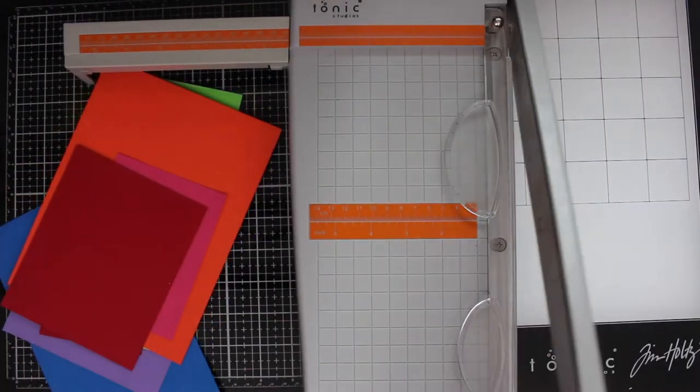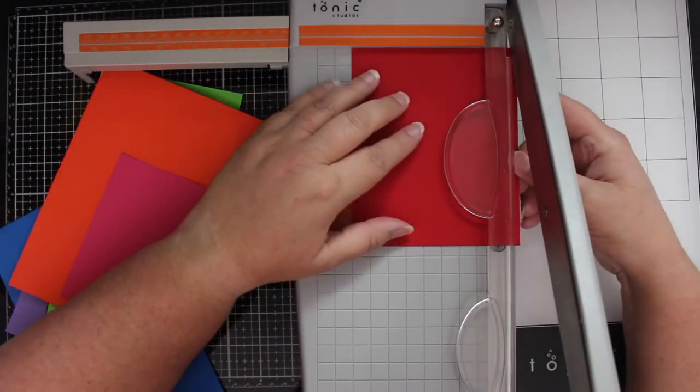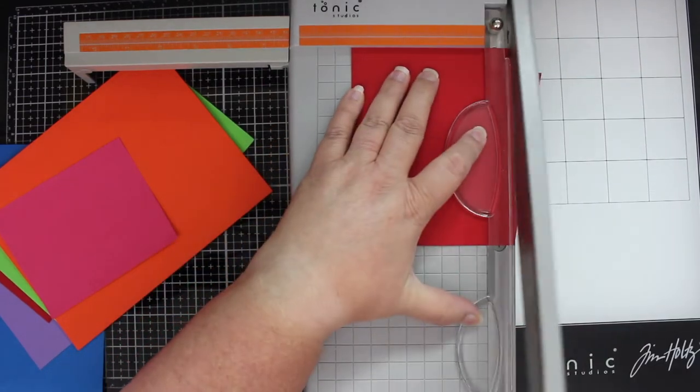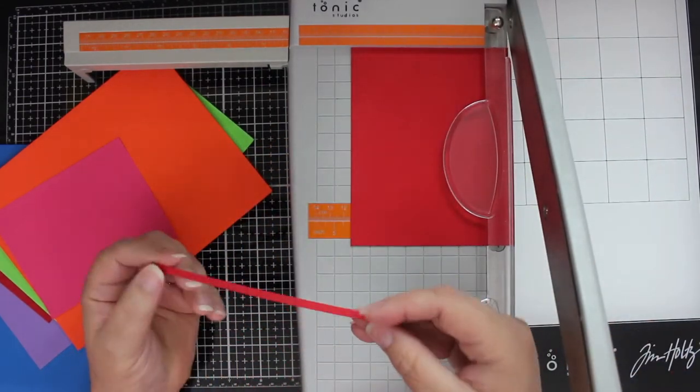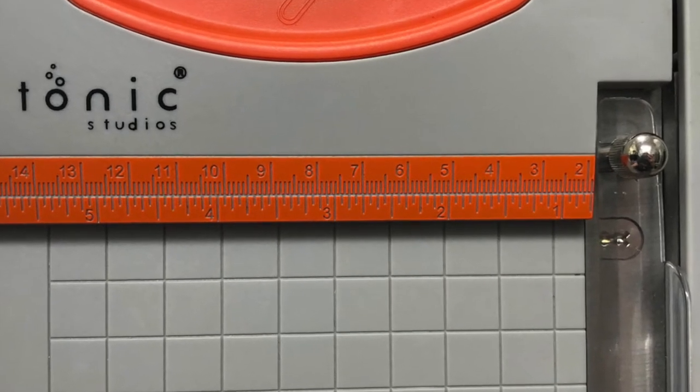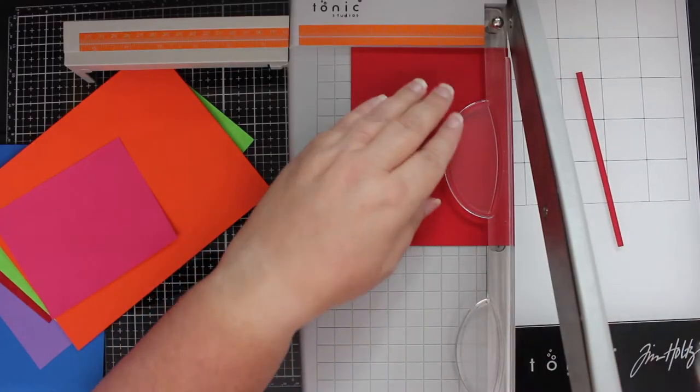This trimmer is great for using up paper scraps since you can cut such tiny little bitty strips. I have a bright rainbow of assortment of scraps I found that I'm going to play with. Looking closely at the cutting guide, you can see that the increments go all the way down to 1/16th of an inch.